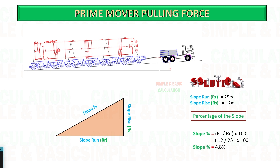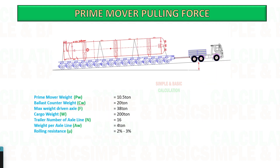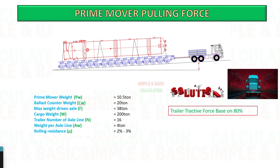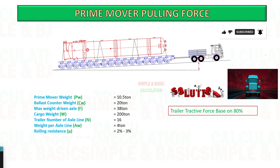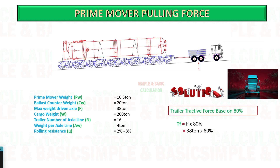To get the percentage of the slope, you need to divide the slope rise by the slope run and multiply it by 100. Next, calculate the tractive force of the prime mover. The driving axles of a truck have the capability to provide a pulling force that ranges from 80% to 90% of the truck's own weight, providing sufficient horsepower and the appropriate gear is engaged.